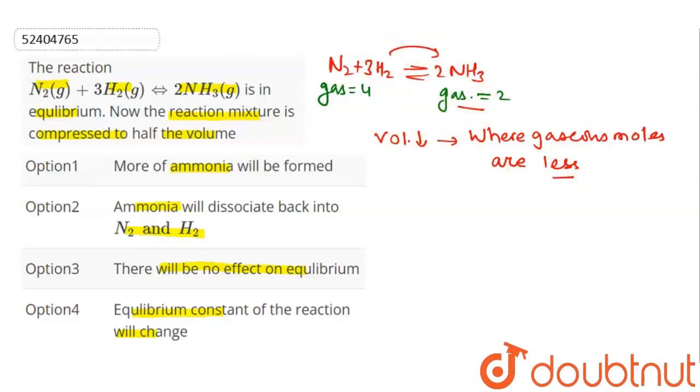So the reaction shifts in the forward direction, and more ammonia will be formed. The answer is option 1.